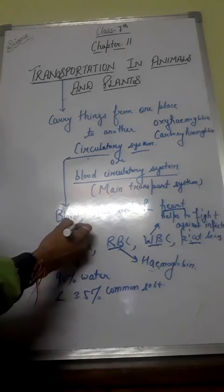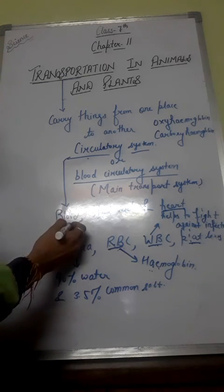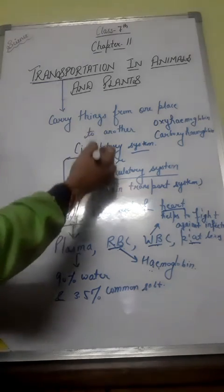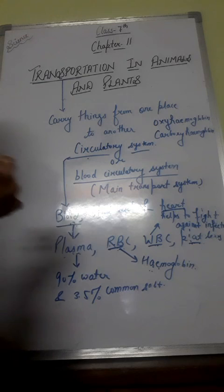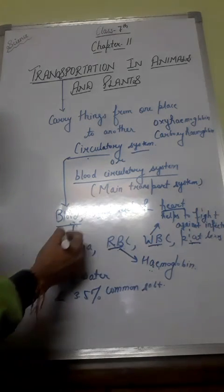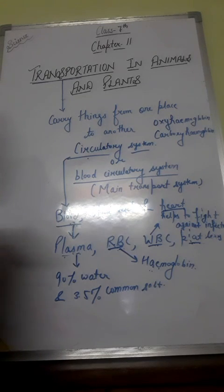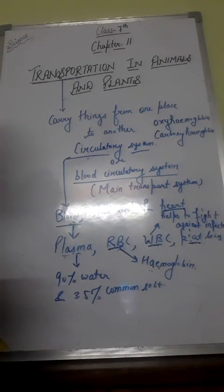The functions of blood include: it transports substances like digested food from the small intestine to other parts of the body; it carries water to all parts of the body; it carries oxygen and CO2 during circulation; and it carries waste products like urea and carbon dioxide from the liver to the kidney for excretion in urine. It also protects the body from diseases. In our next class, we will continue to discuss the other parts of the circulatory system, that is blood vessels and heart. Thanks, have a great day.